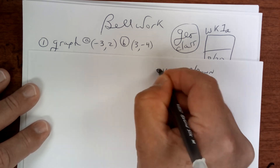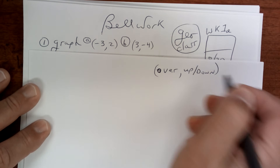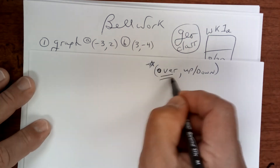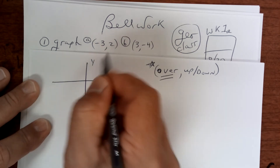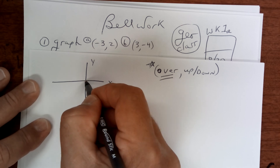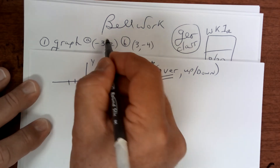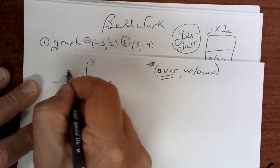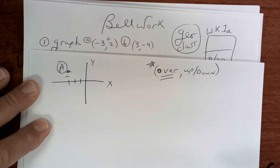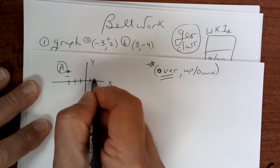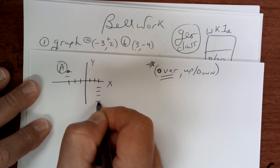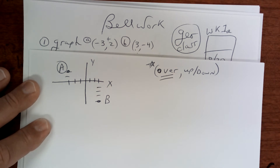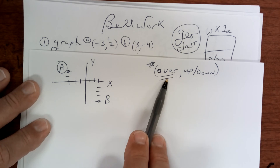You must be able to graph a point — put a star by this. Over first. So this one you're going to go negative 3, so that's 0 and you go over 1, 2, 3, and this is a positive — there's your point A. This one is over to the right because it's positive, then down 4. That's how you graph a point. Say this to yourself: over, then up or down.